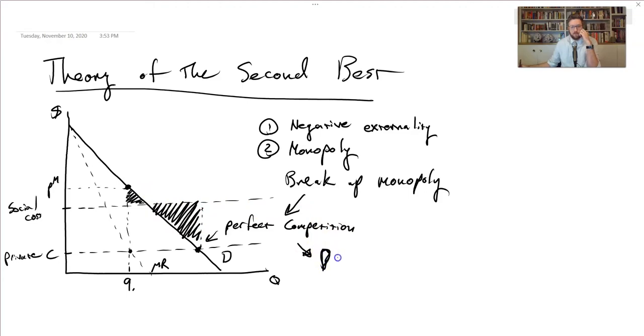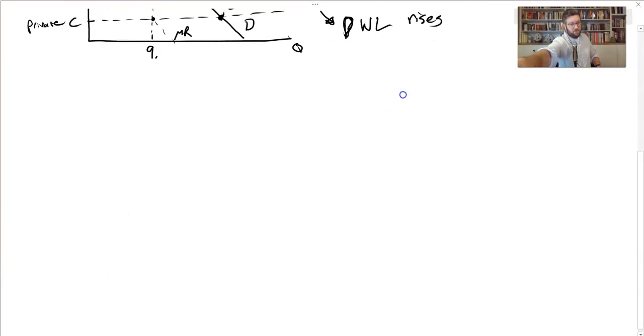So by fixing one problem, but not both, we made things worse. And this is basically the idea behind the theory of the second best. If you can't solve all problems, solving some of them can make things worse.